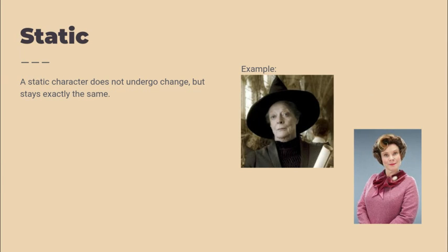A static character does not undergo change but stays exactly the same. This character could be a good guy or a bad guy. In Harry Potter, a good example of a positive static character is Professor McGonagall. She is the Transfiguration professor and is constantly strict, caring, and a source of stability within the story — her personality stays the same and she is the good constant that Harry and the students need. A negative example of a static character is Professor Umbridge. She comes into Hogwarts as a bad character and leaves as a bad character, and is a constant source of stress and power.